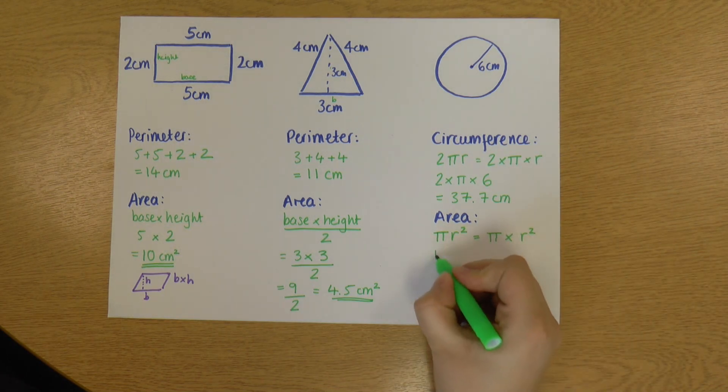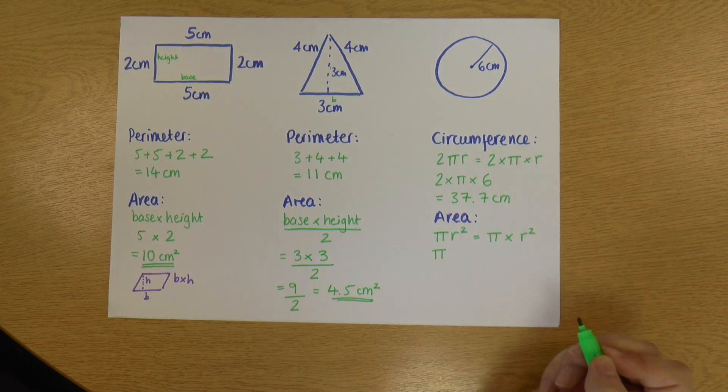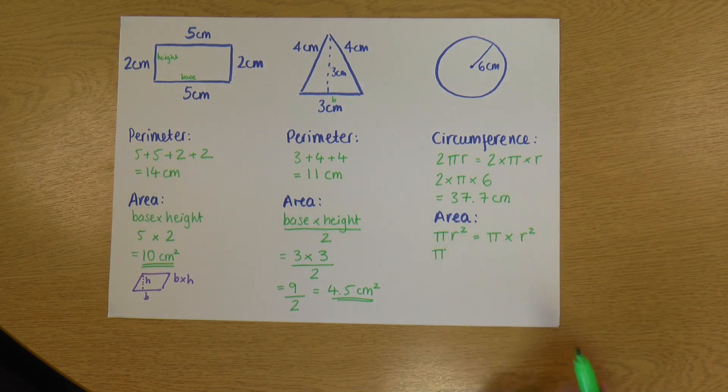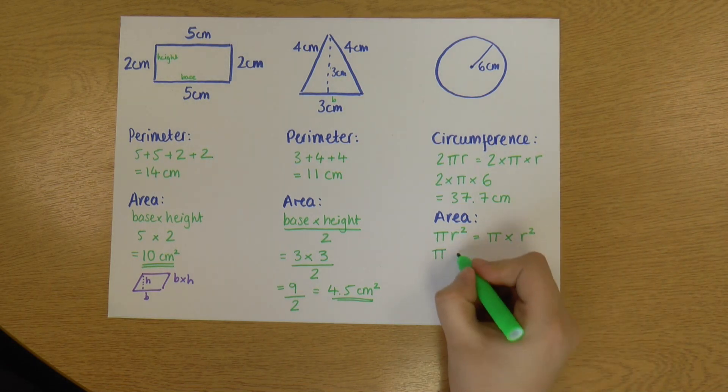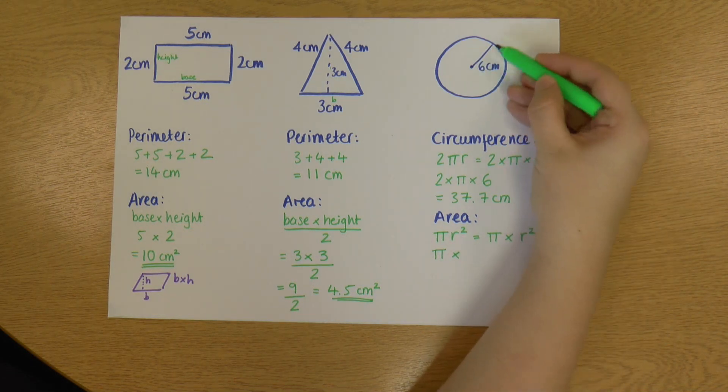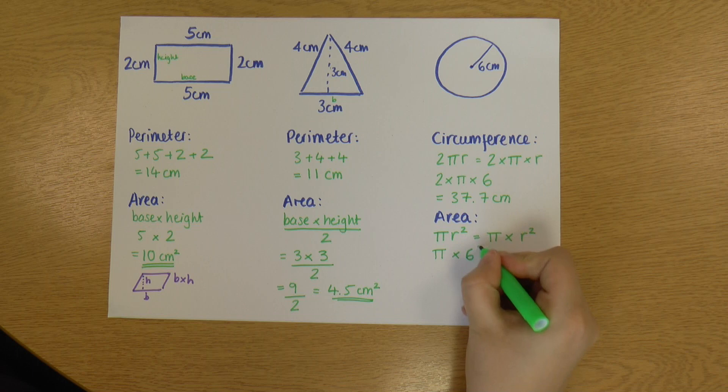So let's do the area of this one. So we've got π. And again, you can just use 3.14. Obviously depends on what your particular exam board wants, but usually it's OK to use 3.14. But I prefer to use the π on the calculator. So it's π times the radius, which is still six. Six squared.